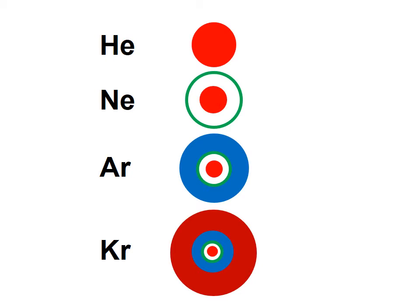However, the overall size of the atom, of course, increases because we're constantly adding new energy levels on the outside, like layers of an onion.